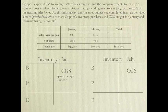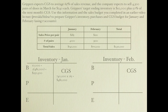Ending inventory is $10,000 plus 50 percent of next month's cost of goods sold, but the problem doesn't tell us beginning inventory directly. Beginning inventory for January will be ending inventory from December. Using the ending inventory formula, January's beginning inventory is $10,000 plus 50 percent of January's cost of goods sold, which comes to $250,500.